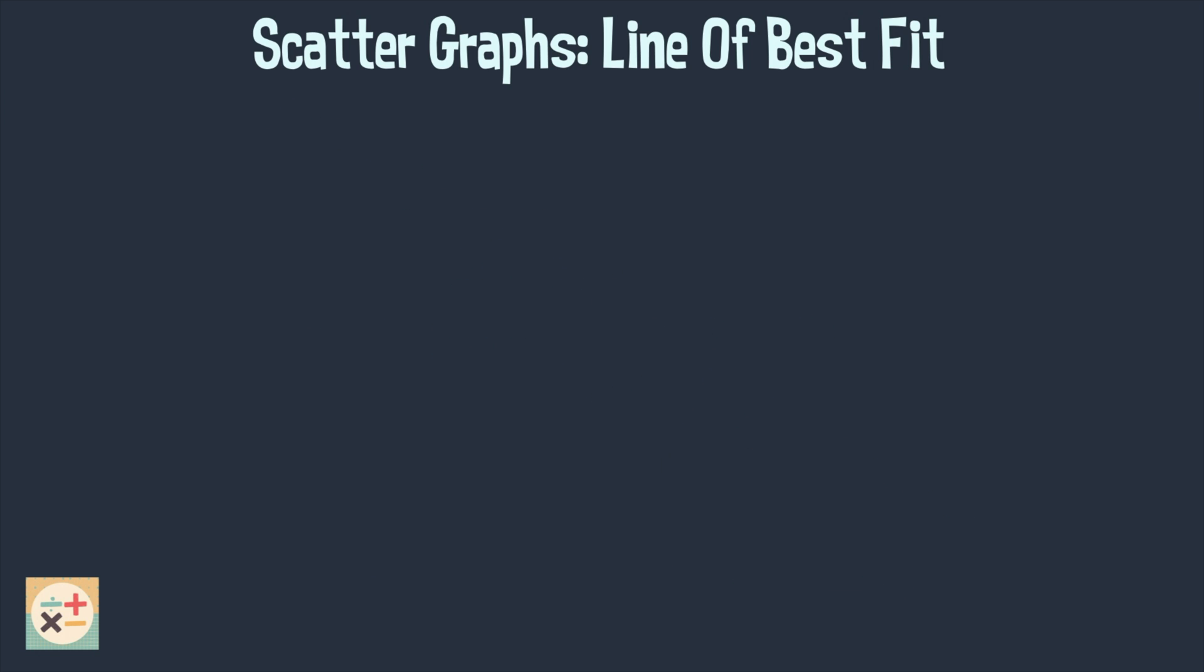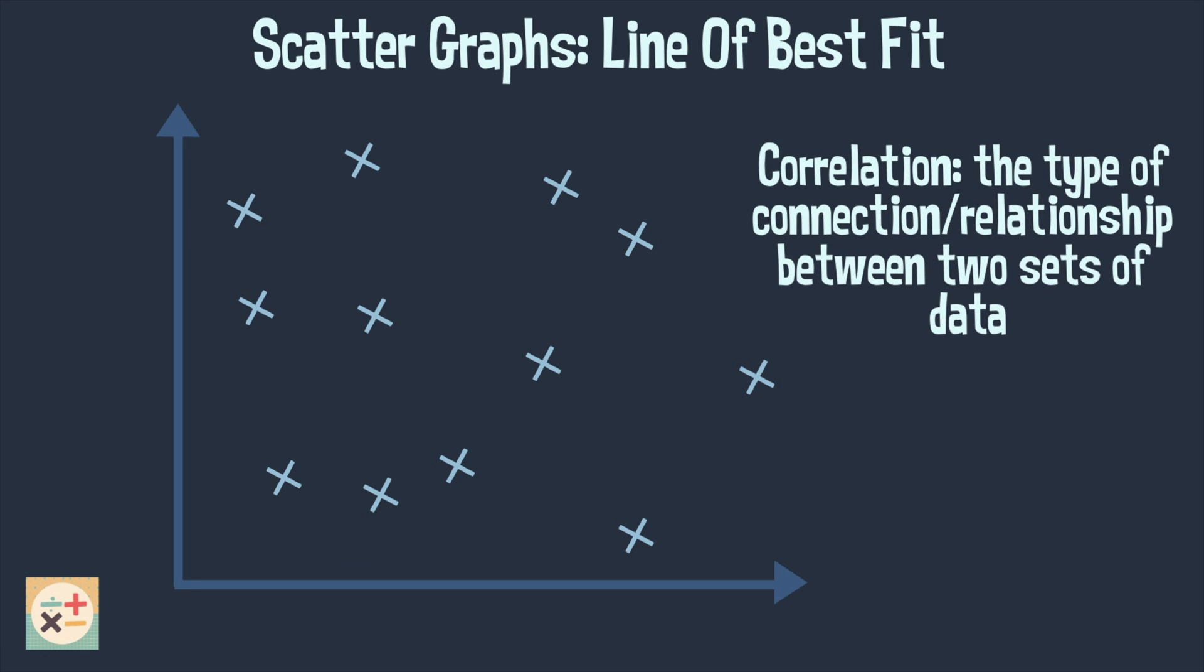But what if our scatter plot looks like this one? As there is no correlation we are unable to draw a line of best fit.